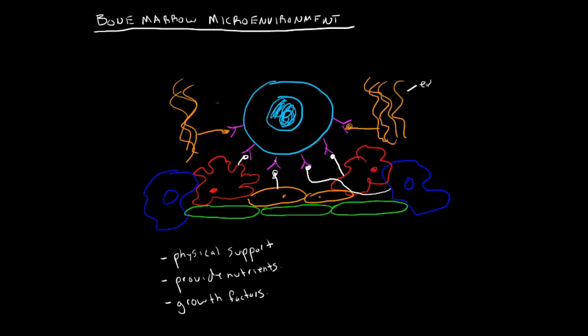I guess I can label all this. So that's extracellular matrix, stem cell, fat cell, macrophage, endothelial, and fibroblast.